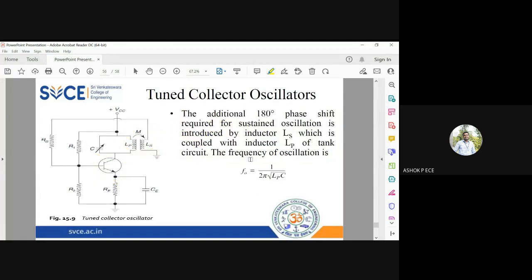So this circuit is going to generate sustained oscillations and the frequency of oscillations will depend on these two parameters. The tank circuit only across the primary, you have LP parallel to C. So this will decide the frequency of oscillations: f naught is going to be equal to 1 by 2π root of LP into C.